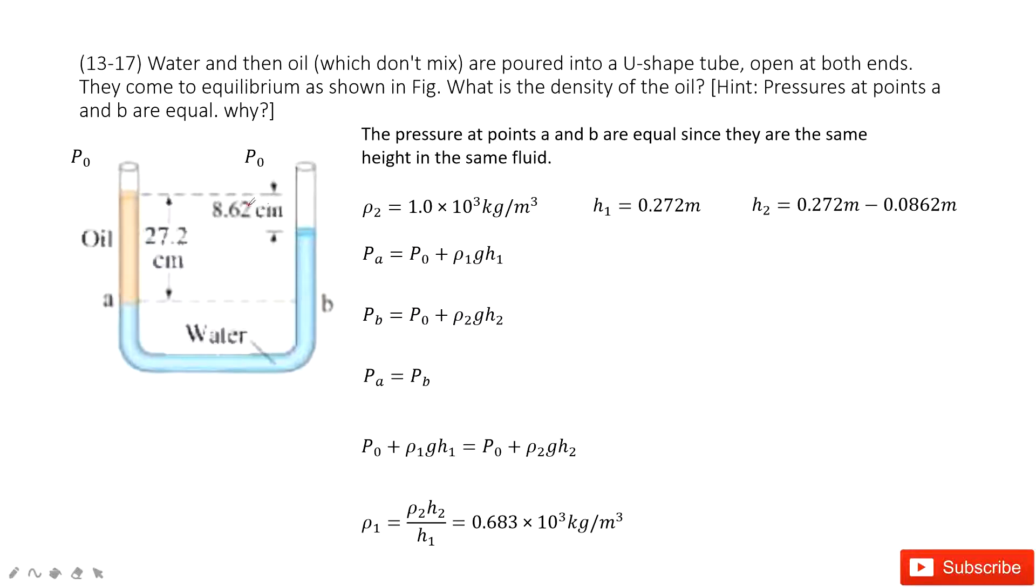We can see we have a U-shaped tube. It looks like this resistor. This part is oil, this part is water. The H for the water and for the oil are given there. The H for the water is H2, this part. The H for the oil is this part, 0.272 meters.